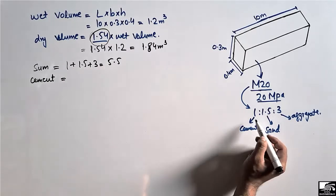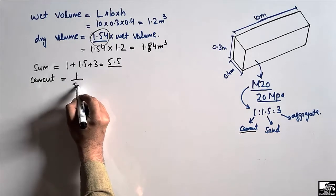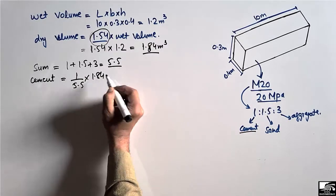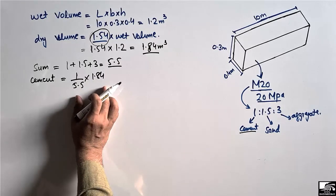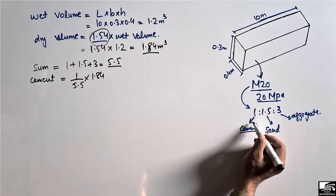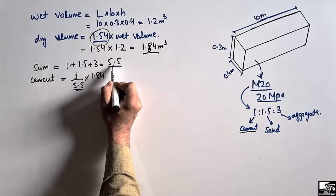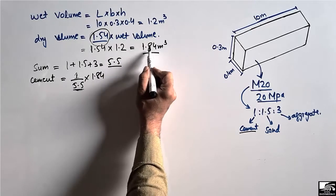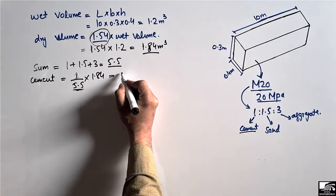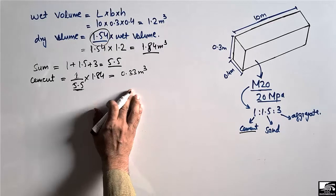The cement quantity is calculated using the formula: cement ratio divided by total ratio, multiplied by the dry volume. So that is 1 divided by 5.5, multiplied by 1.84, which gives the quantity of cement as 0.33 cubic meters.